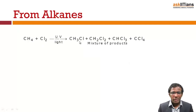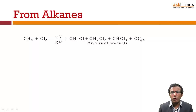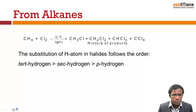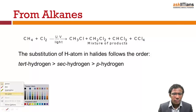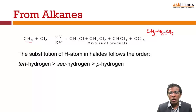So the reaction between methane and excess chlorine gives four products — a mixture including the mono-, di-, tri-, and tetra-halogen derivatives. The substitution of hydrogen atoms follows the order: tertiary hydrogen first, then secondary, then primary. For example, in propane (CH₃CH₂CH₃), the two end carbons are primary and the middle carbon is secondary, so they are not equivalent.